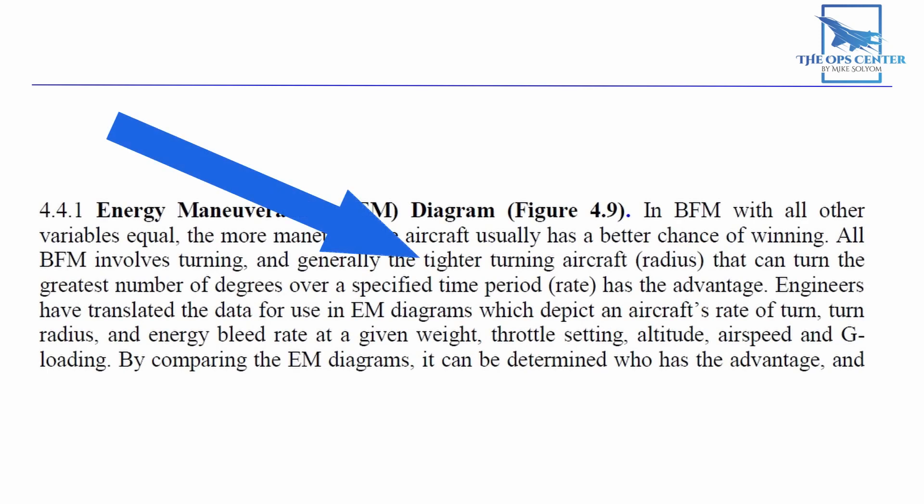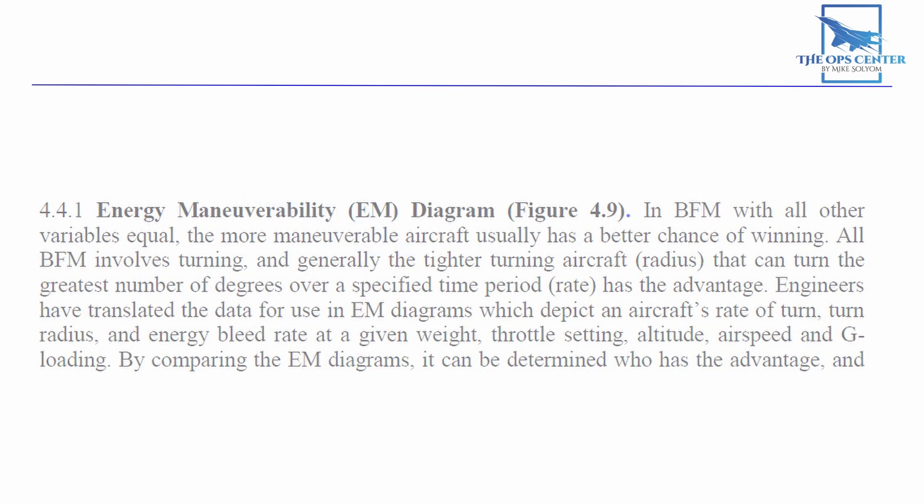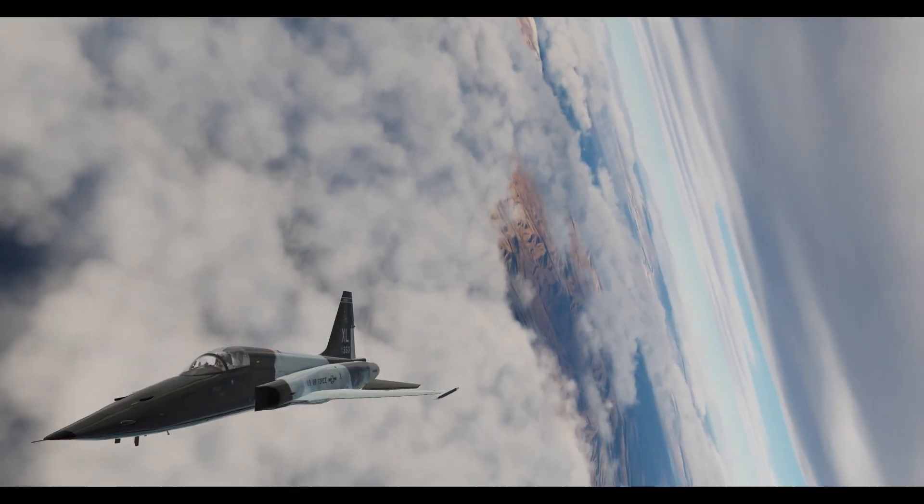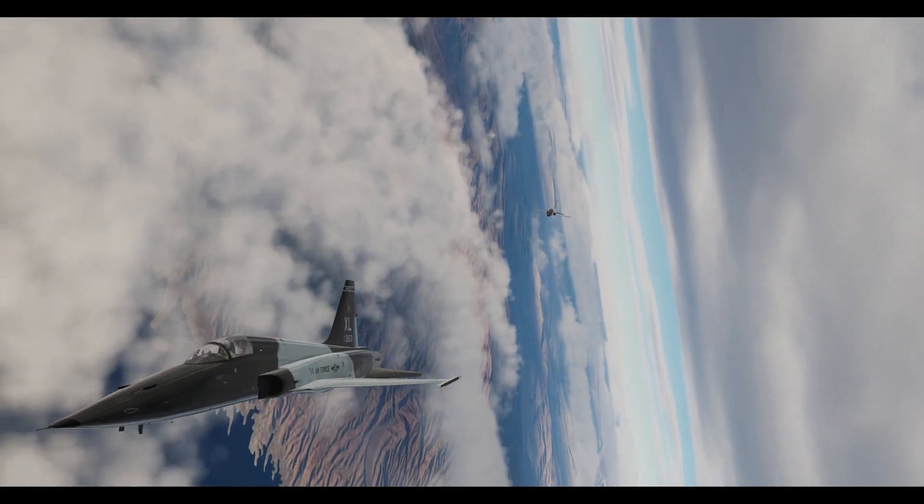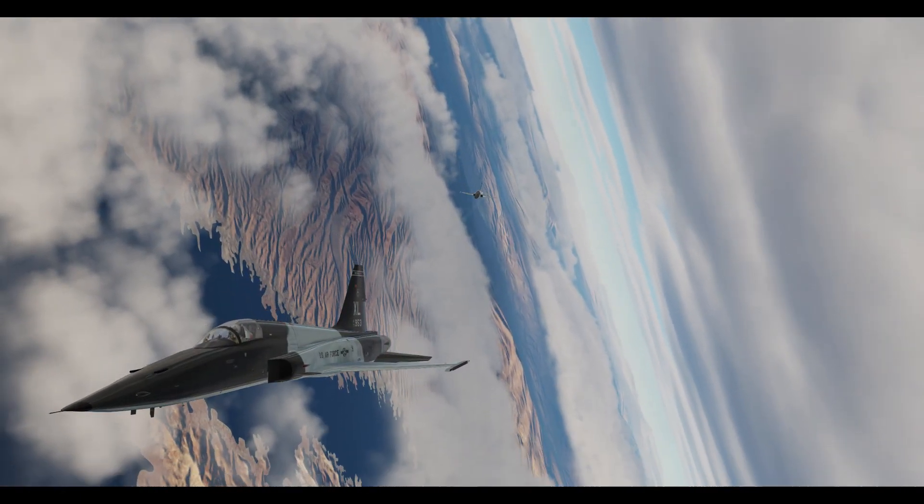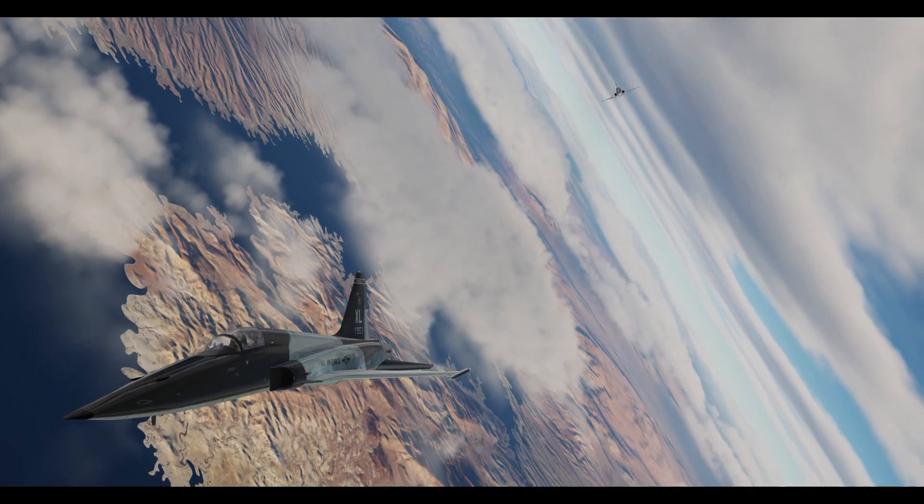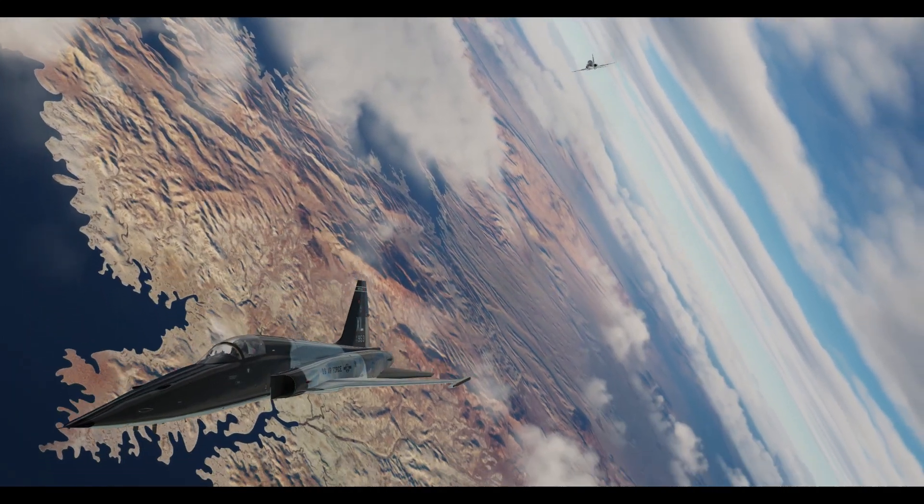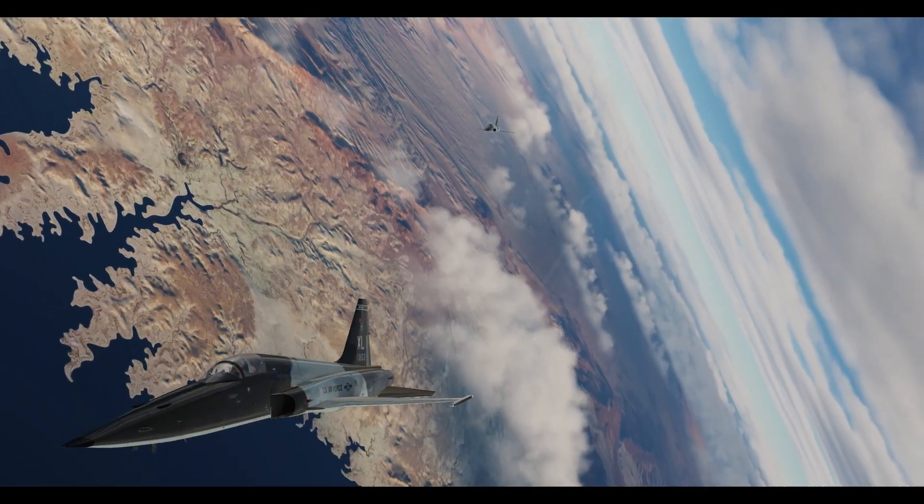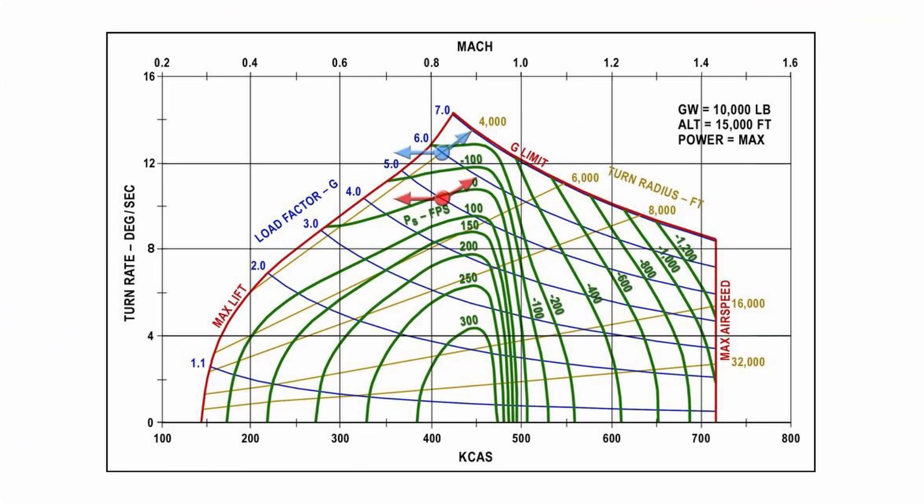In BFM, we know the tighter turning aircraft that can turn the greatest number of degrees over a specified time period has the advantage. We always want to find that point on an aircraft's performance chart that will give us the most maneuverability. Since that performance envelope changes depending on multiple factors, you'll see several EM diagrams in an aircraft's manual, with each one made for a specific set of parameters. Typically, you'll find the chart is made for a specific combination of airframe weight, altitude, and throttle setting.